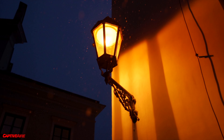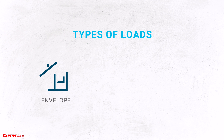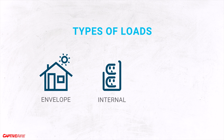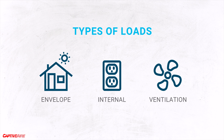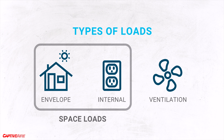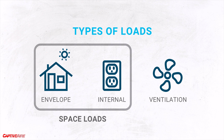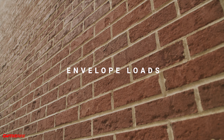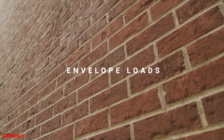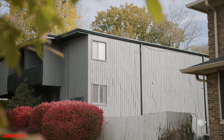When we talk about building loads and load types, these can apply to both heating and cooling. In the summer, anything that heats up the building is a cooling load; in the winter, anything that makes the building colder is a heating load. We can split the loads into three categories: envelope loads, internal loads, and ventilation loads. You'll also hear the term space loads, meaning the envelope and internal loads only.